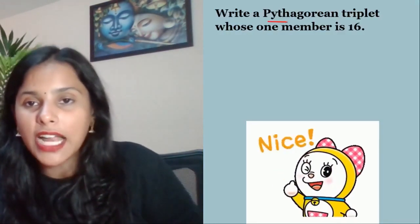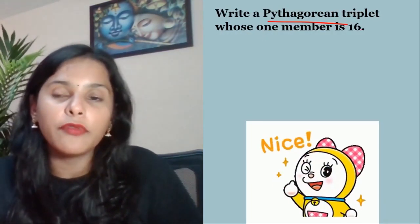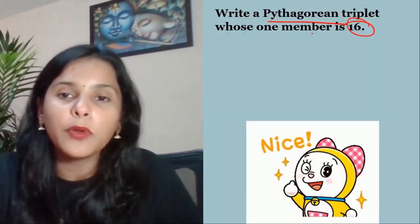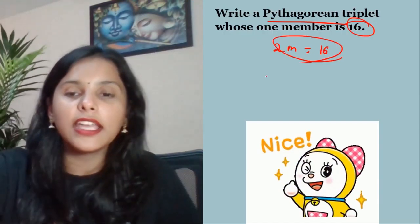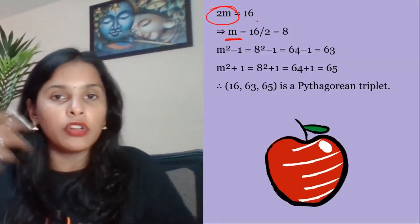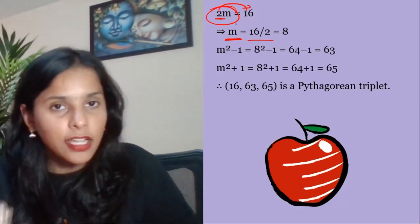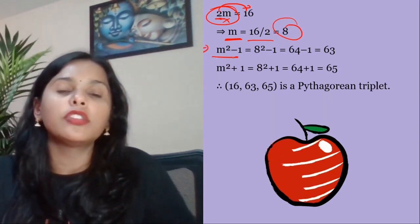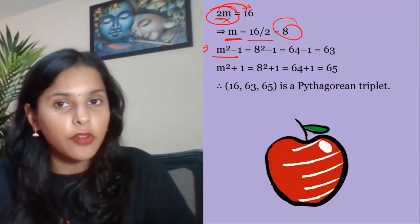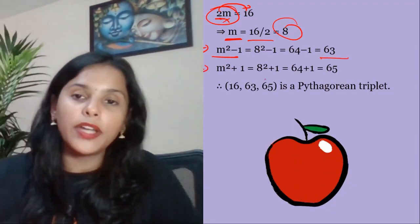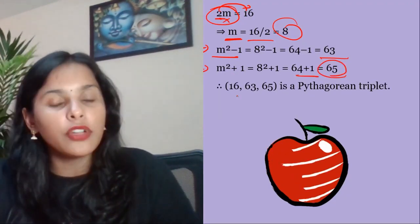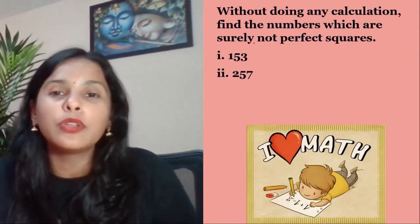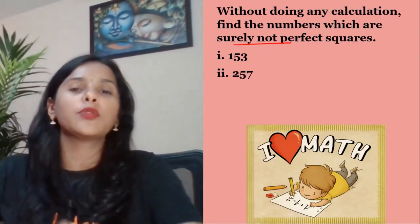Write the Pythagorean triplet where one member is 16. For a Pythagorean triplet, the members are 2m, m²−1, and m²+1. Since 2m = 16, m = 8. So the second member = 8² − 1 = 63, and the third = 8² + 1 = 65. The Pythagorean triplet is 16, 63, 65.